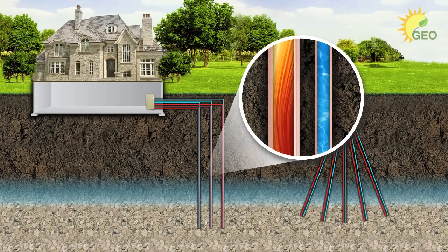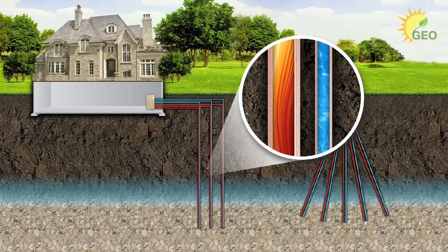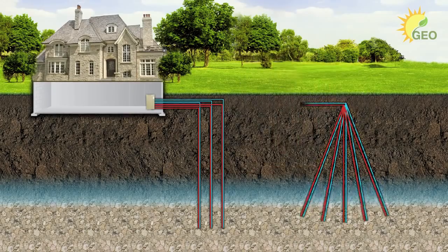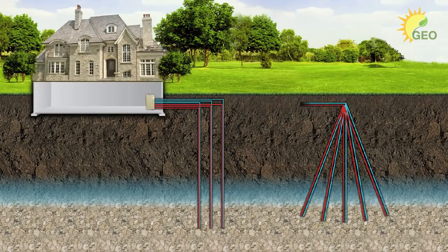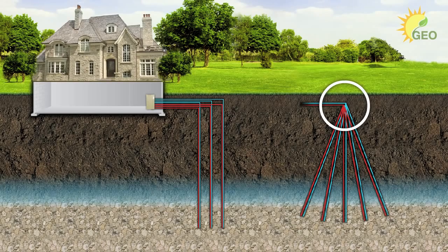Envision each borehole as a 7-foot diameter cylinder that uses this area to gather the Earth's energy. When ground space is a concern, a teepee style or slant configuration can be used to reduce the area needed for drilling. Notice the reduced surface area needed at the top of the boreholes.